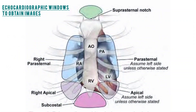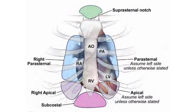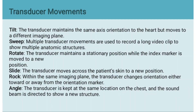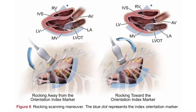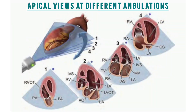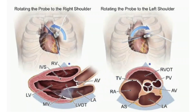These are the anatomic locations of all the six windows. Before starting to learn how to make views, one should know all the transducer movements. These movements include tilting, sweeping, sliding, rotation, rock motion, and angulation of the probe.